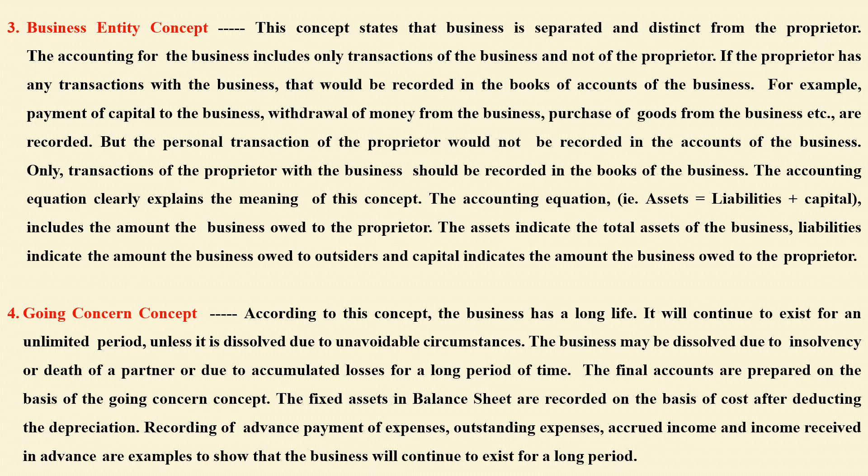When the businessman is withdrawing cash, that will be treated in a drawings account. Similarly, when the businessman is purchasing goods from the business, that will also be debited in the drawings account. Capital means credited — credit for the business. The accounting equation is: assets equals liabilities plus capital. Liabilities means the amount to be paid by the company to outsiders, and capital means the amount for the owners.